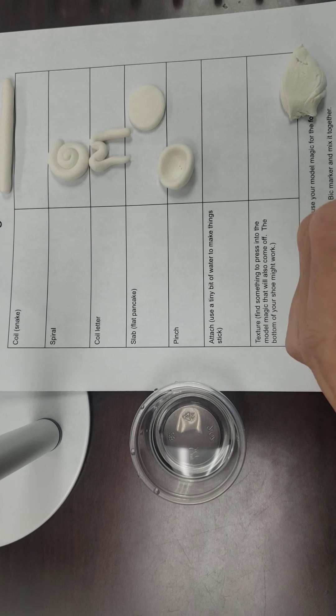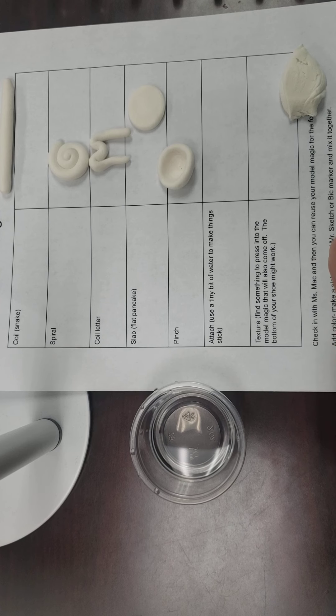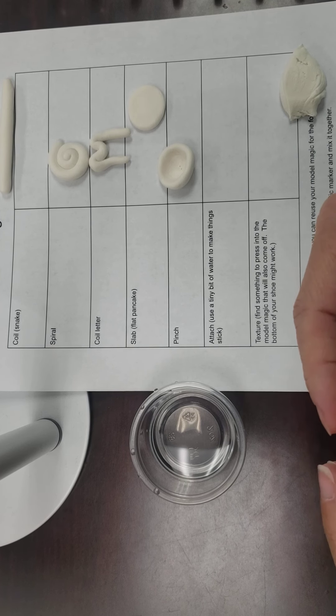And the thing with model magic is it doesn't do great attachments. So this is where if you're really building something kind of intricate and where you want pieces to stick together, clay might be a better option. But model magic is better used if you can keep things in one piece.